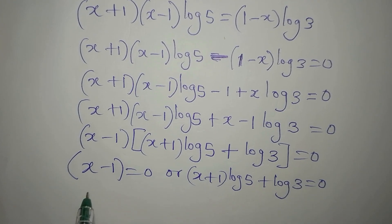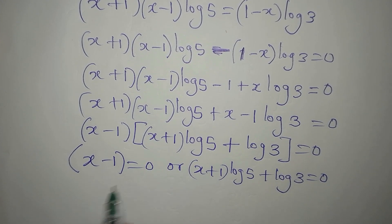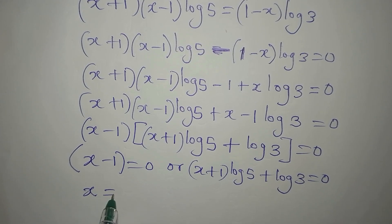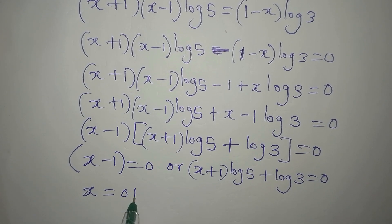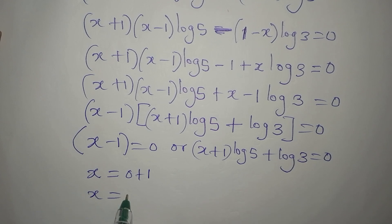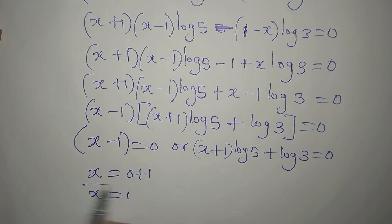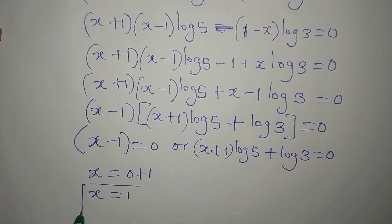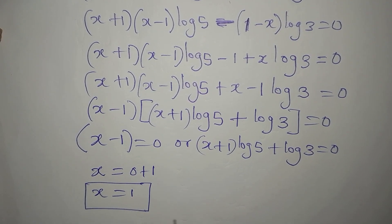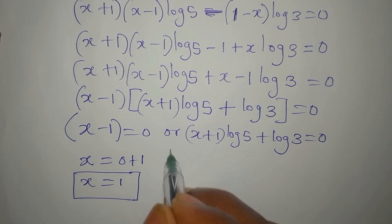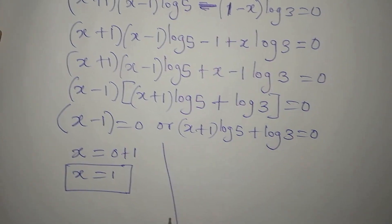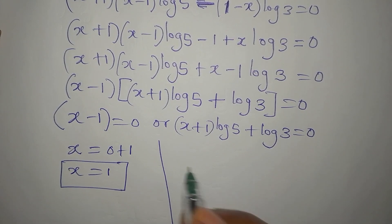Since we are multiplying these two factors to get 0, we can say x minus 1 equals 0, which gives x equals 1. This is one of the solutions. The other solution will be obtained from the remaining factor.